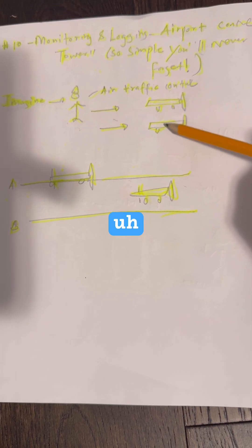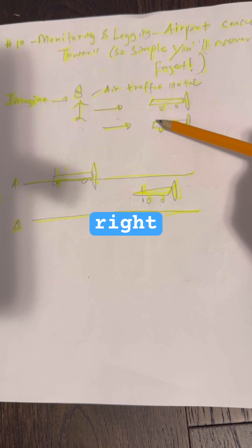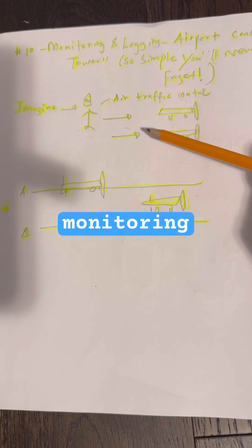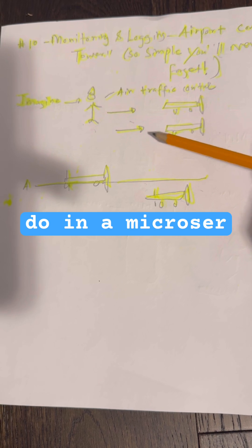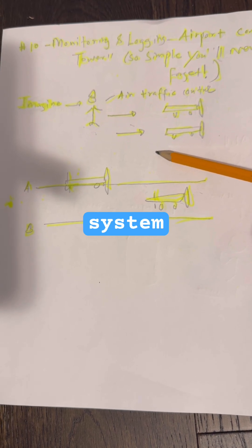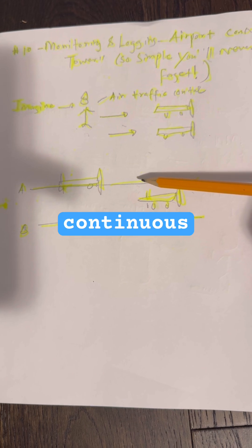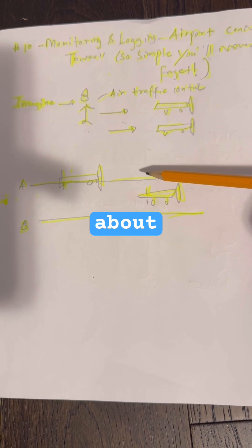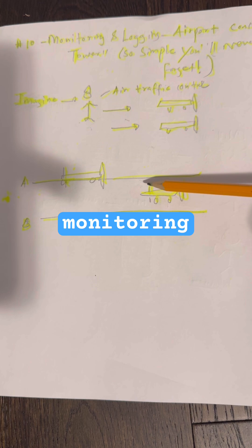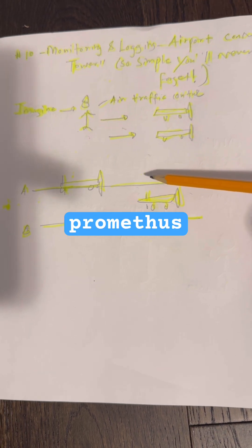That's exactly what monitoring and logging do in a microservice system. Each service is like a plane. It sends continuous updates about its speed, route, and health. Monitoring tools like Prometheus or Grafana act as your control towers showing real-time dashboards.